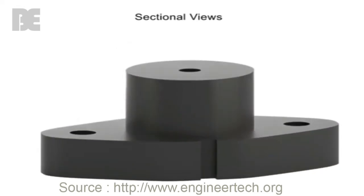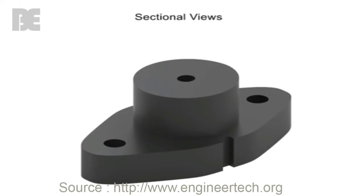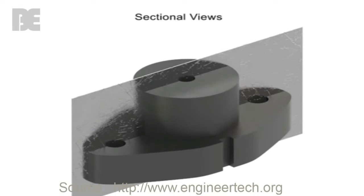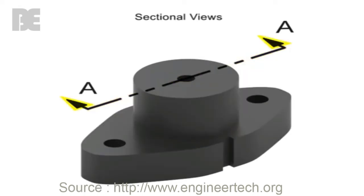A sectional view is made through an outside view. To make the section, imagine a plane cutting through the part. The cutting plane is indicated by a line with arrows called a cutting plane line.